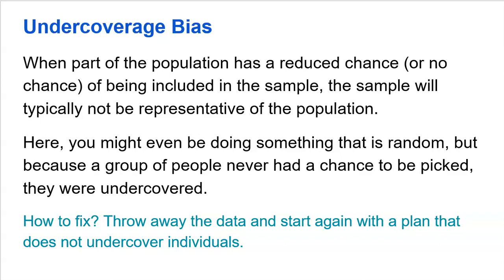Another example: if I want to get people's feelings on school lunch but I only ask people that are in line for lunch — even if I choose them randomly — chances are if you're in line for lunch, you like the lunch. So I was over covering people who like the lunch and under covering all those other people who don't buy lunch because they don't like it. I never even got their opinions. So how do you fix under coverage bias? Throw your data away and start all over again, finding a way to not undercover or over cover people.